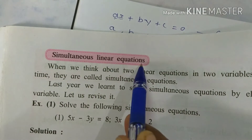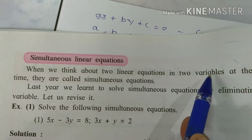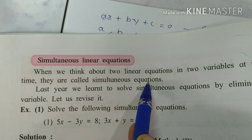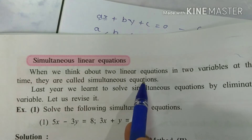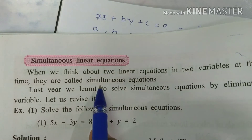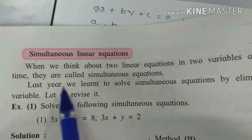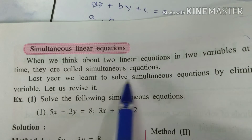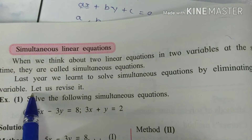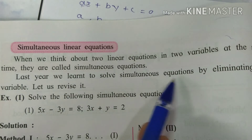Simultaneous Linear Equations: When we think about two linear equations in two variables at the same time, they are called simultaneous equations. Last year, we learned to solve simultaneous equations by eliminating one variable.